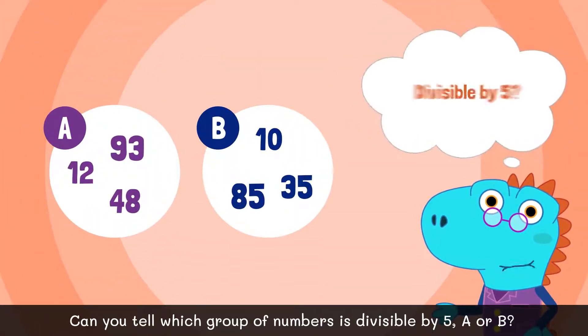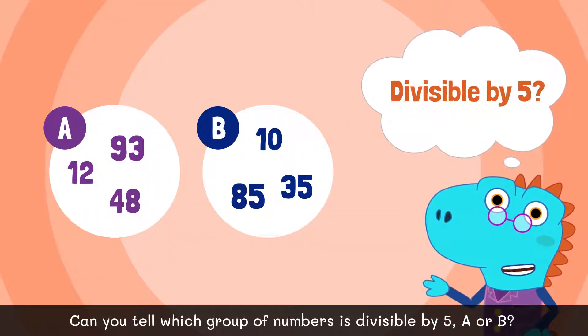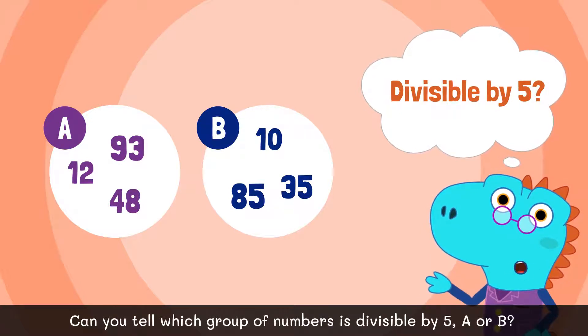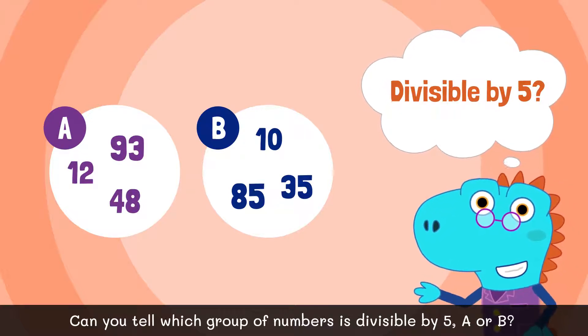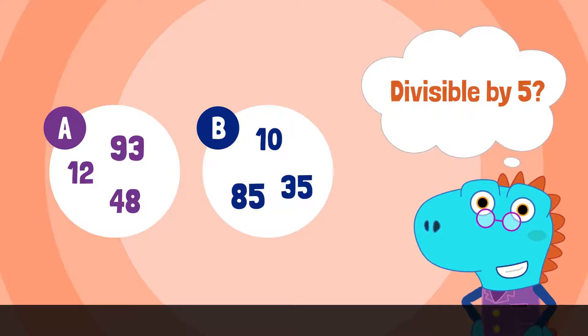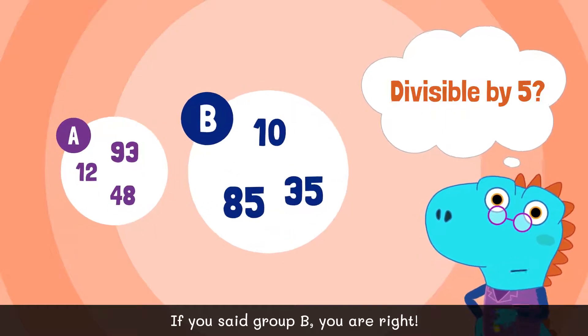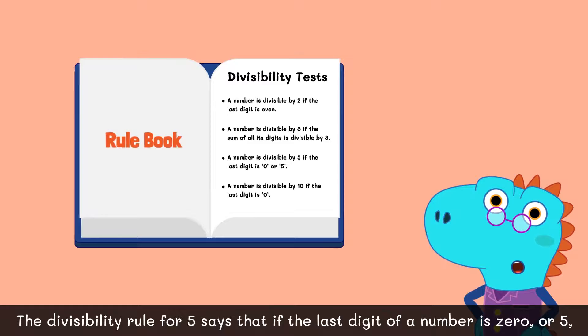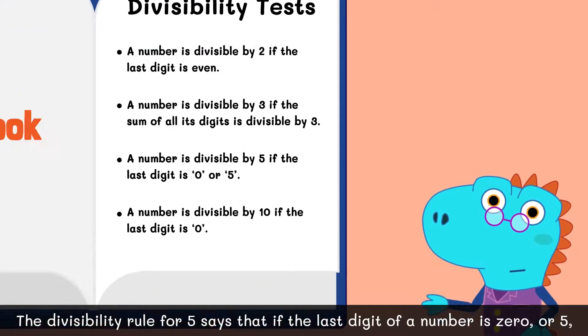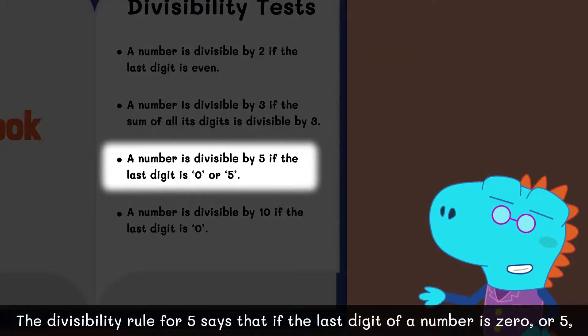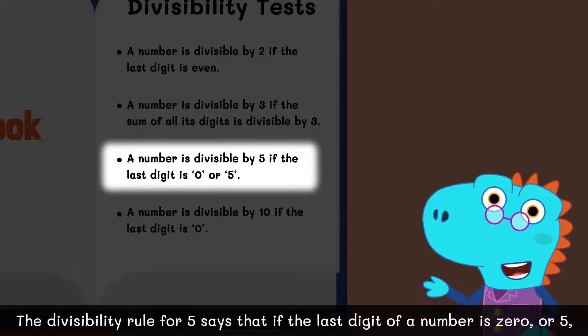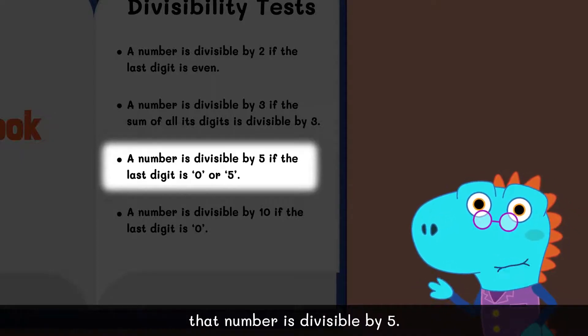Can you tell which group of numbers is divisible by 5? A or B? If you said group B, you're right. The divisibility rule for 5 says that if the last digit of a number is 0 or 5, that number is divisible by 5.